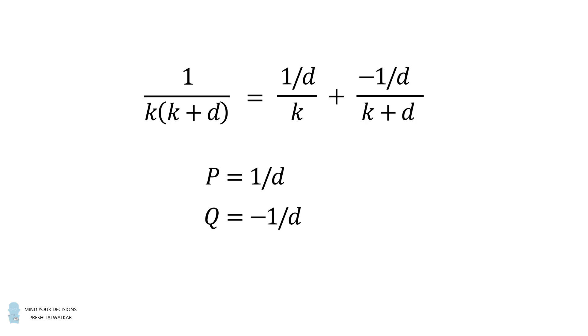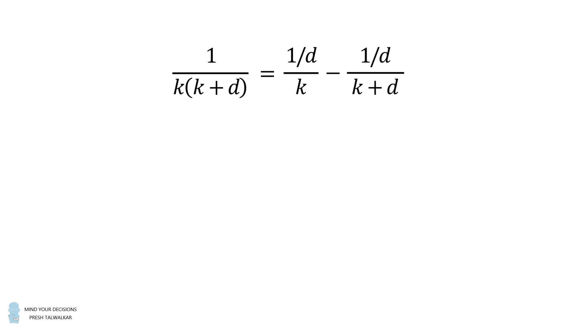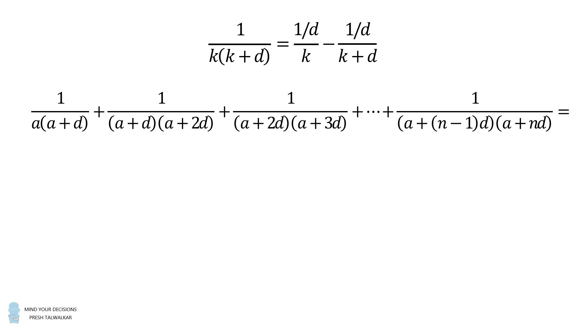We'll just move this negative sign to the second term over here. So we have the partial fraction decomposition that this is equal to 1 over d divided by k minus 1 over d divided by k plus d. We will use this formula on each term in this sum.